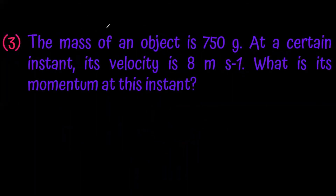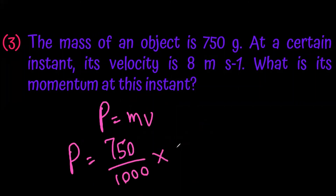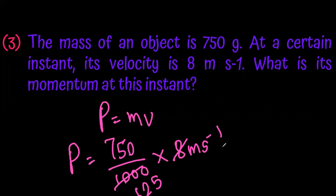The mass of an object is 750 grams. At a certain instant, its velocity is 8 meters per second. What is the momentum at this instant? Using p equals mv: 750 divided by 1000 into 8 m·s⁻¹. Dividing 750 by 125, we get the answer as 6 kg·m·s⁻¹.